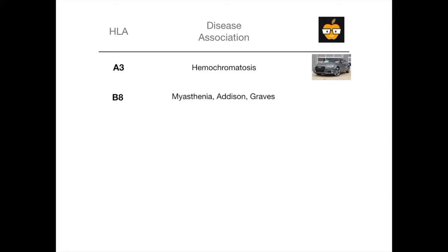HLA B8 is associated with myasthenia gravis, Addison's disease, and Graves disease. I want you to think about MAG — M-A-G: M from myasthenia, A from Addison, and G from Graves. So MAG. And specifically I want you to think of magazine. Now how are we relating magazine to B8? I got you.